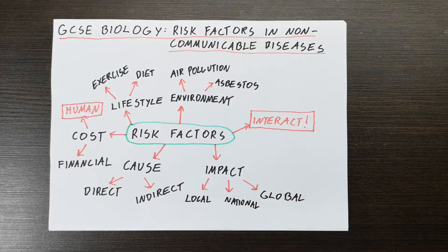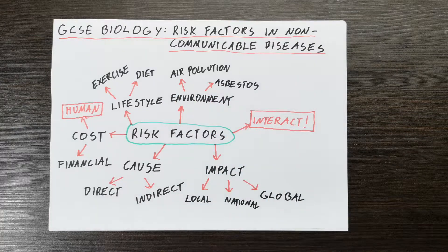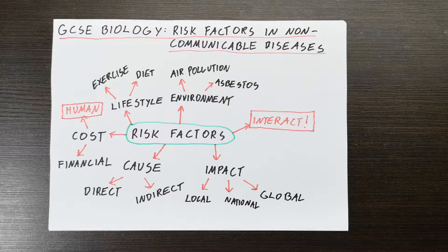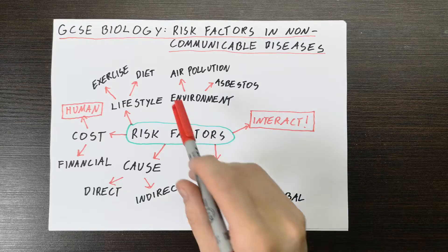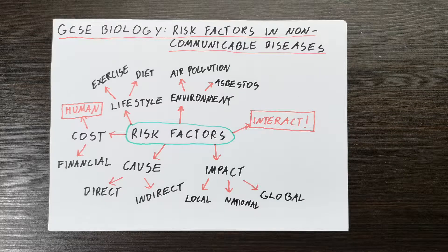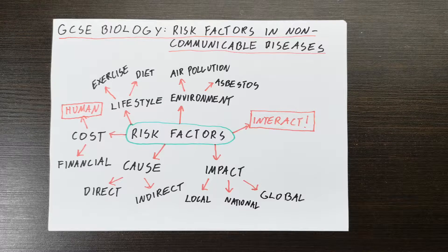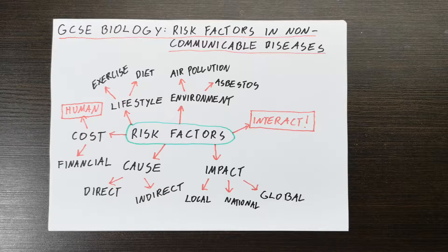Another type of risk factor could be environment — things such as air pollution and asbestos. Even if somebody has what we would consider an active lifestyle and balanced diet, they may still be exposed to a higher risk of certain diseases due to the environment they live in. For example, if somebody lives in a polluted city, they have a higher risk of various cancers. Similarly, if people breathe in asbestos regularly, that damages their lung fibres and can increase their risk of cancer. Again, that's not a 100% certainty — it's just a risk factor.